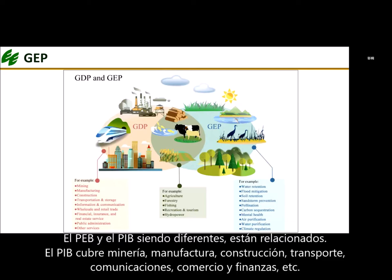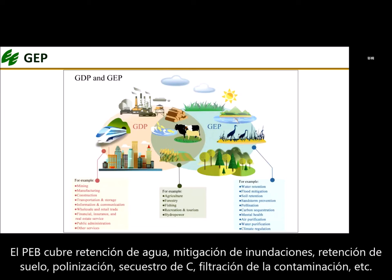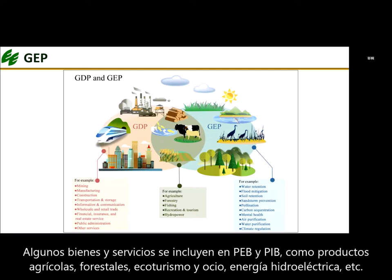GEP and GDP are different indicators, but the two are also related. GDP covers mining, manufacturing, construction, transportation, communications, commerce, and finance, among other sectors. GEP primarily covers water retention, flood mitigation, soil retention, pollination, carbon sequestration, pollution filtration, and so on. However, some goods and services are included in the accounting of both GDP and GEP, such as agricultural products, forestry products, ecotourism and leisure, and hydropower, among others.